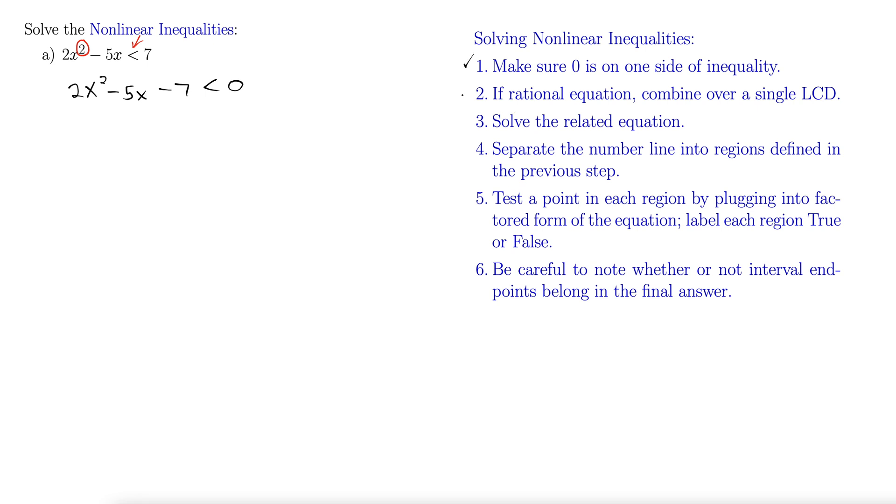If it's a rational equation, it's not a rational equation, so we don't have to worry about that. A rational equation would have a fraction with x's in the denominator. Solve the related equation. What that means is we're solving 2x squared minus 5x minus 7 equals zero. This can be solved by factoring, thank goodness. If it couldn't be solved by factoring, we'd have to break out the quadratic formula.